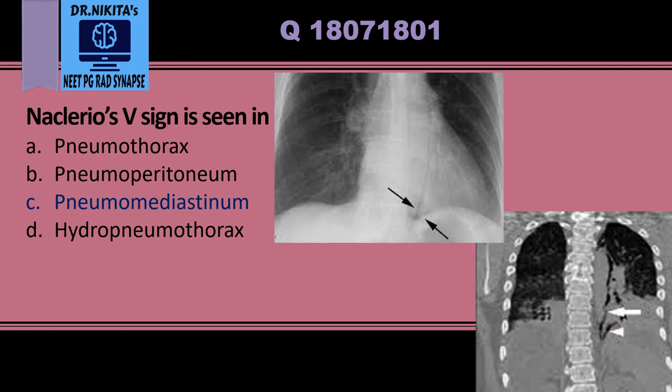This V-shaped collection of air at the aorto-diaphragmatic junction is called the Naclerio's V sign, and it is seen in pneumomediastinum.